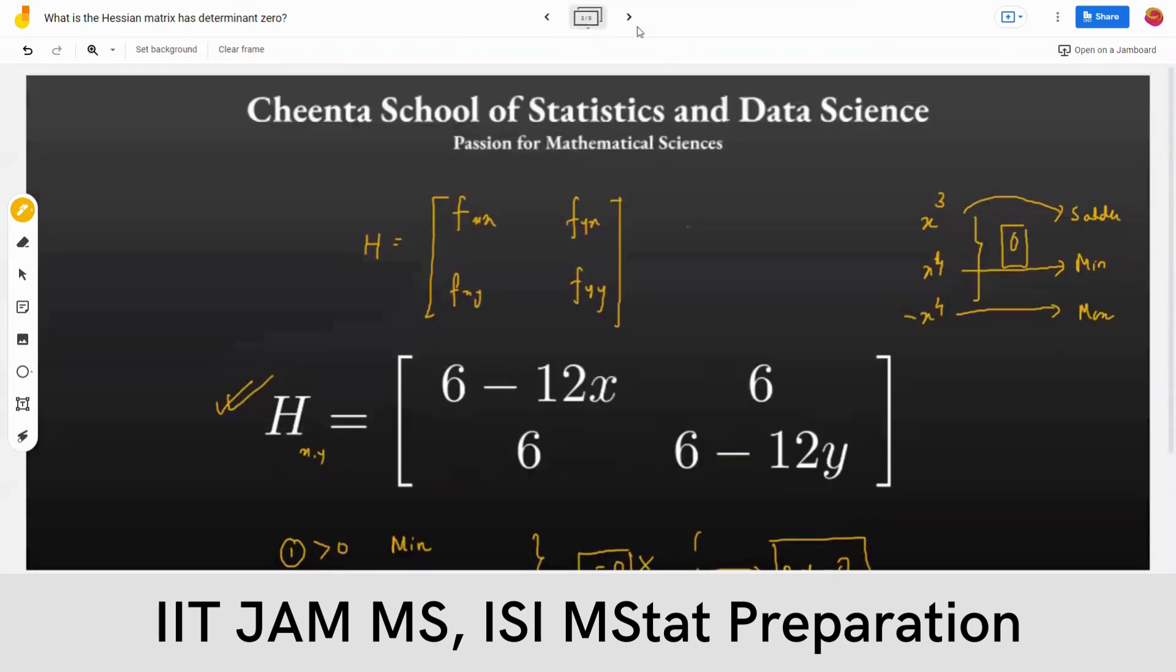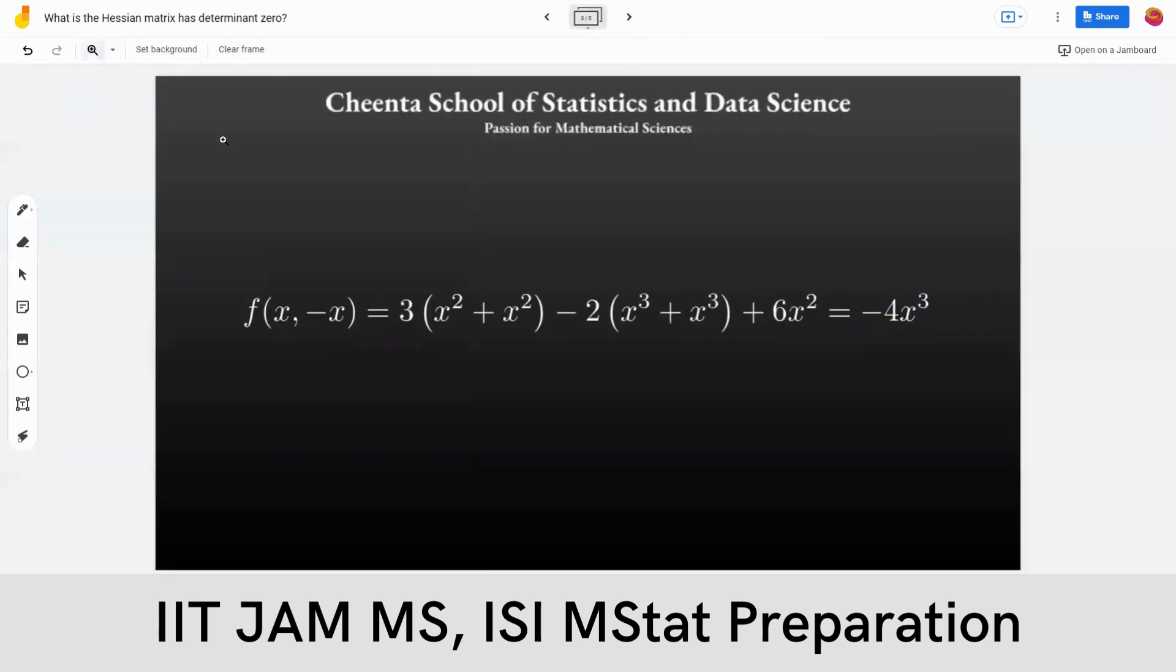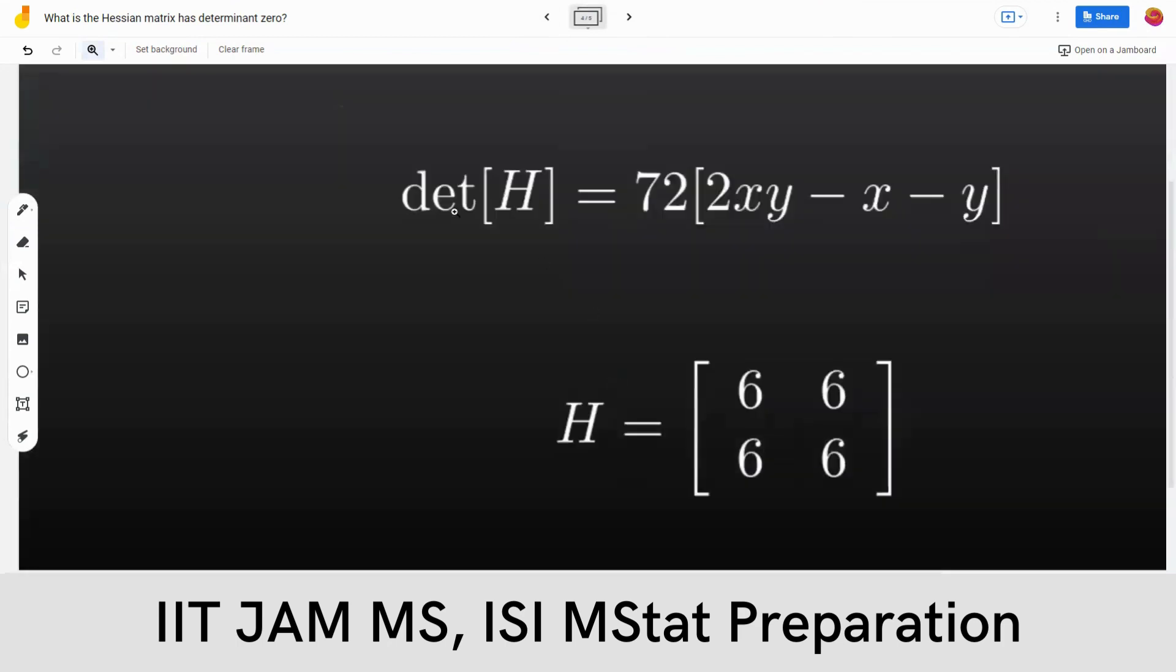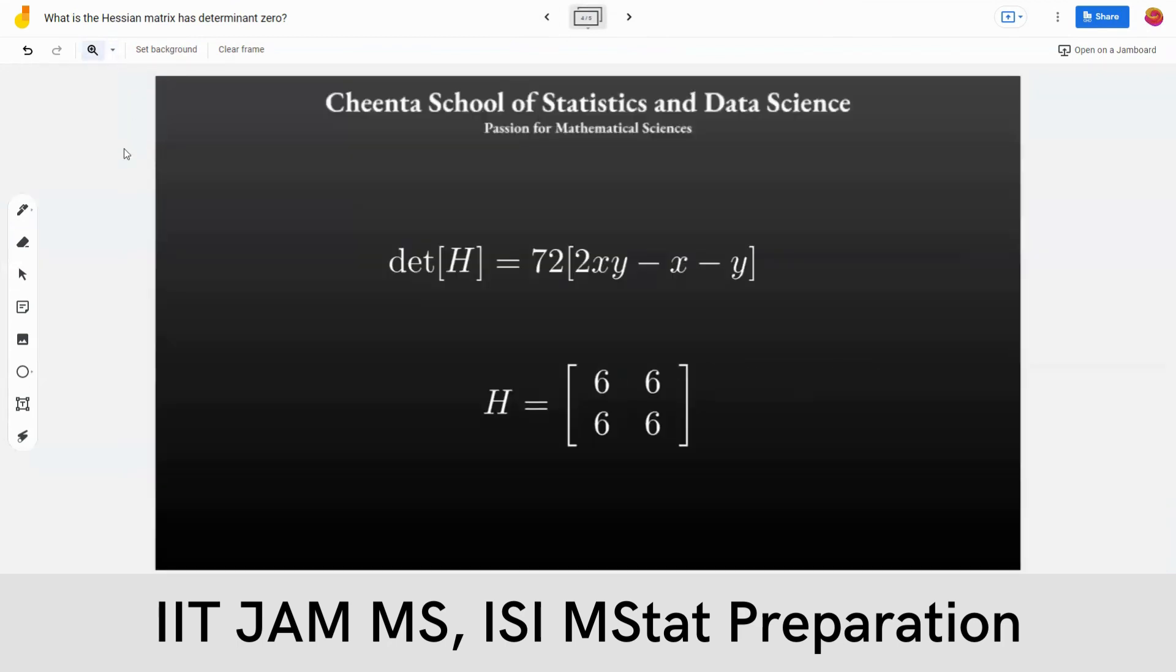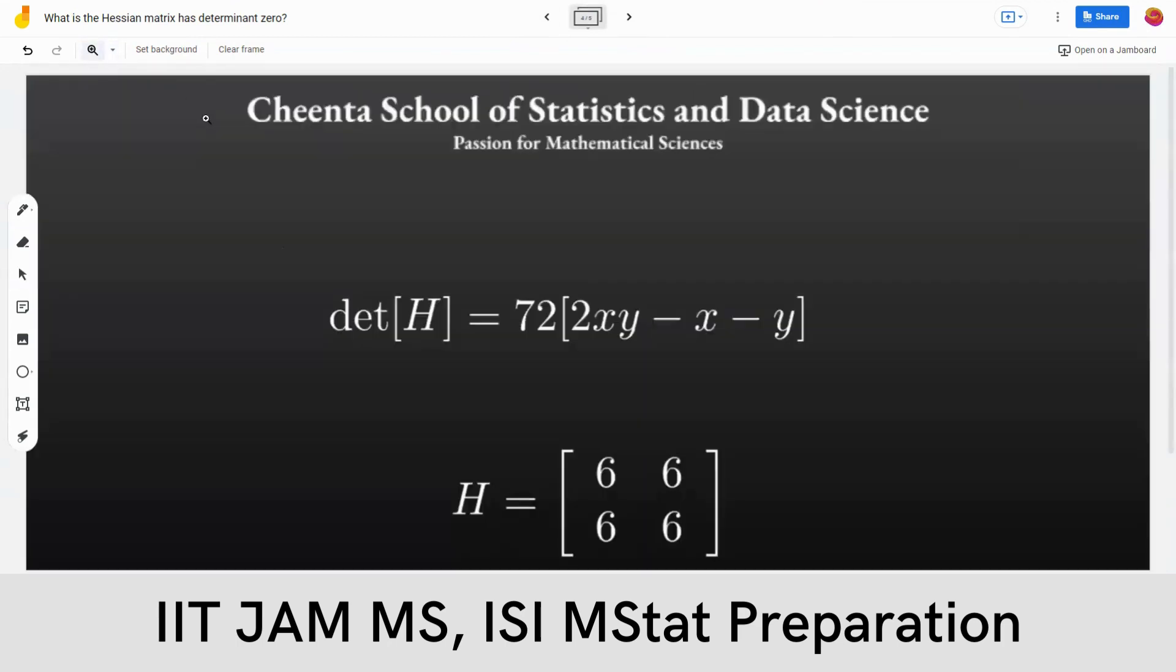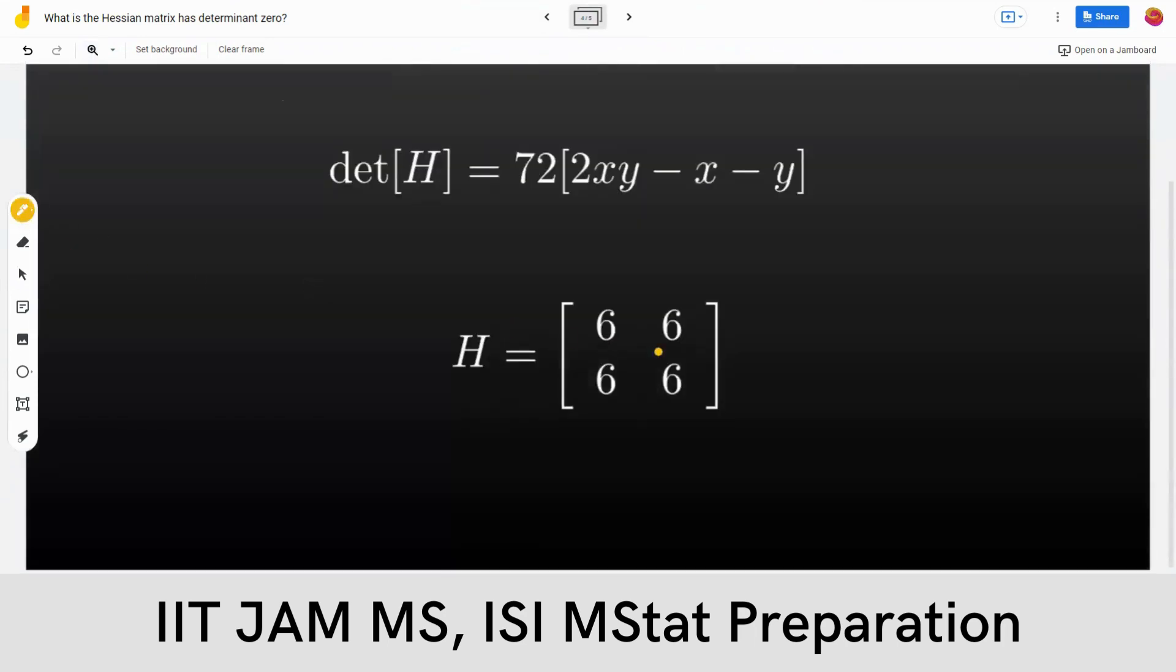Because let's check the determinant of this. If you do the determinant, you will see that the Hessian matrix comes out to be [6, 6; 6, 6] at that point (0, 0), and you get the determinant of H to be zero.